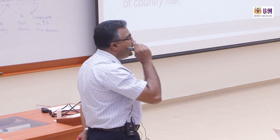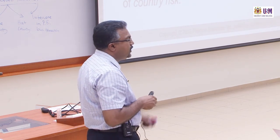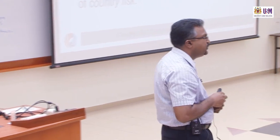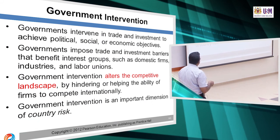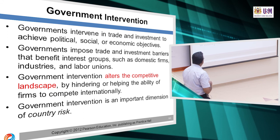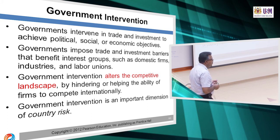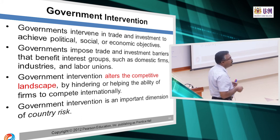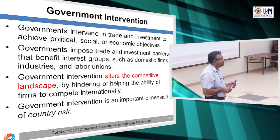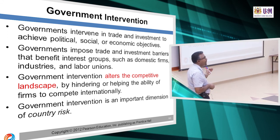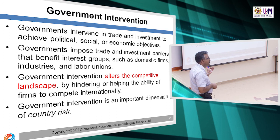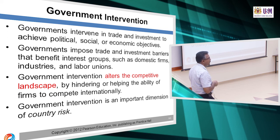Government intervention can pose risk in terms of political risk. Governments intervene in the trade and investment of private enterprise to achieve political, social and economic objectives. Government plays an important role to ensure political stability, economic success, social stability, and economic prosperity. So government intervenes through a lot of instruments which we are going to look at later.